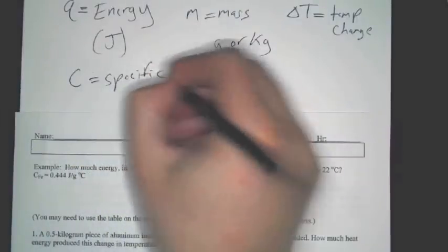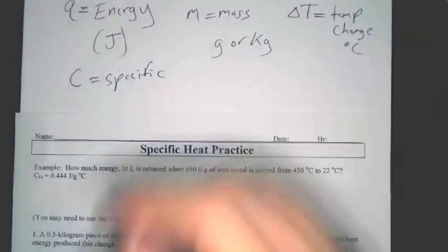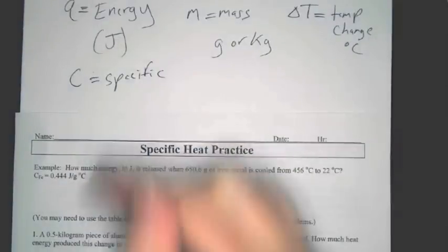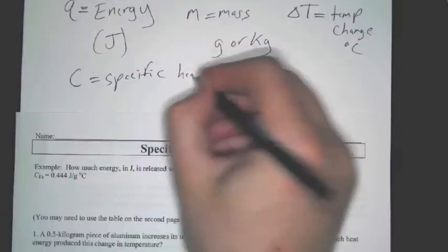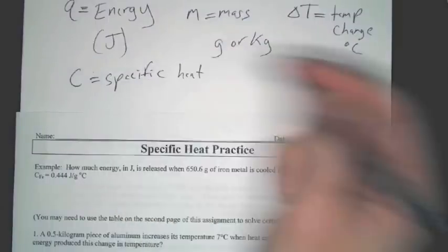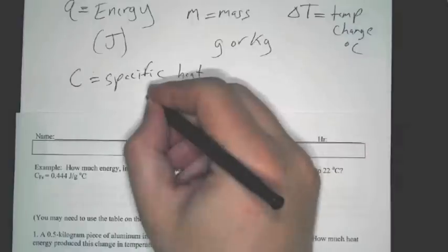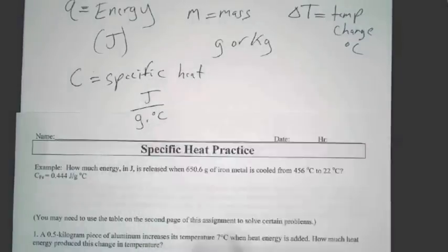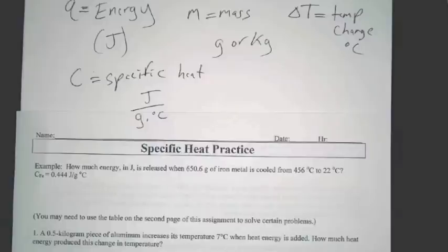Now, temperature change will almost always be degrees Celsius, even though it can be degrees Fahrenheit. And specific heat will always be these units, depending on what our mass is. It will be joules per gram times degrees Celsius. So there's like a ratio there that we're going to deal with. So don't let that confuse you.